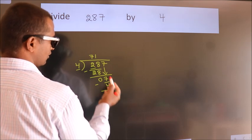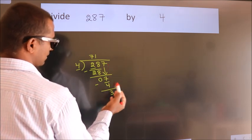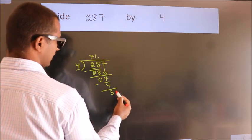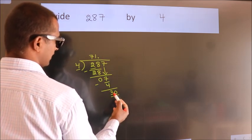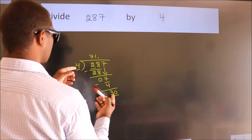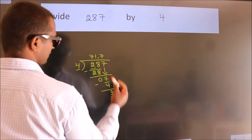After this, no more numbers to bring down. So what we do is put a dot and take 0. So 30. A number close to 30 in 4 table is 4 times 7 equals 28.